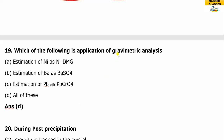Question on applications of gravimetric analysis: the estimation of nickel, barium, and lead. The precipitation formula is used for these. The answer is all of these.